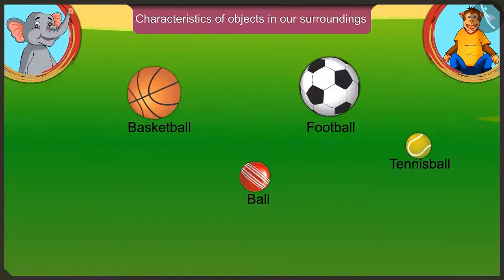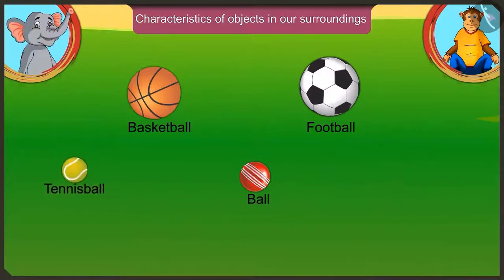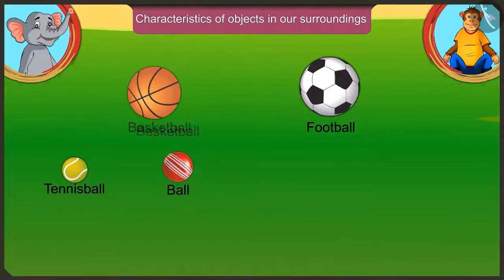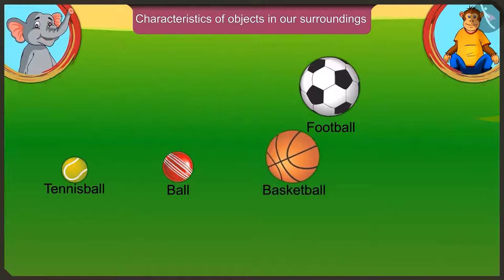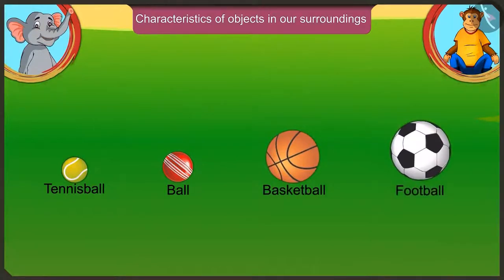Now come on, just arrange these balls in ascending order of their size. According to their size, we first place the smallest tennis ball, then the ball bigger than that, then basketball, and finally the largest football. Well done Appu.